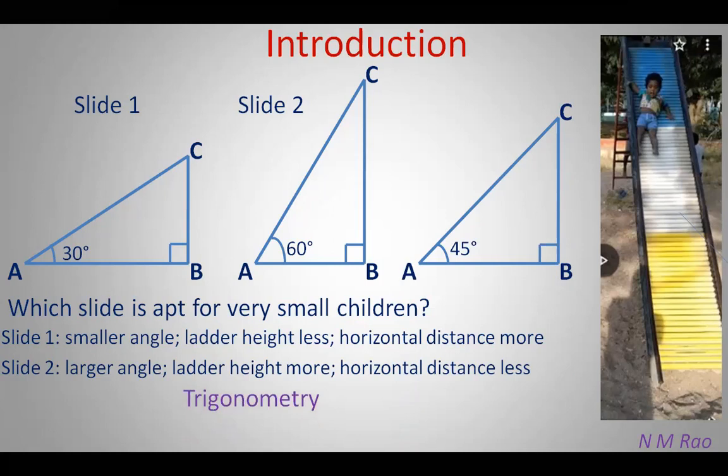Trigonometry contains three Greek words: tri means three, gonia means angle, and metri or metron means measure. So altogether, trigonometry means measurement of three angles.